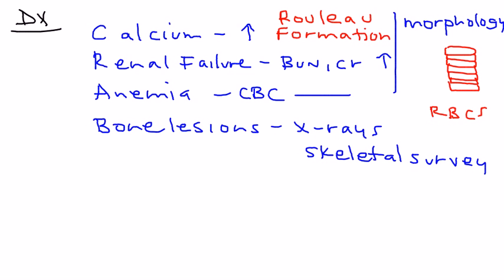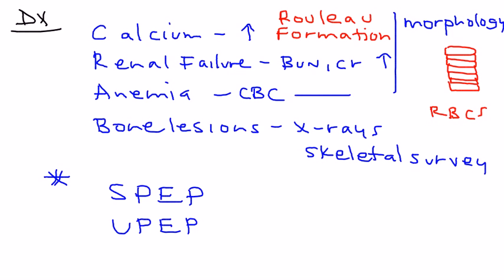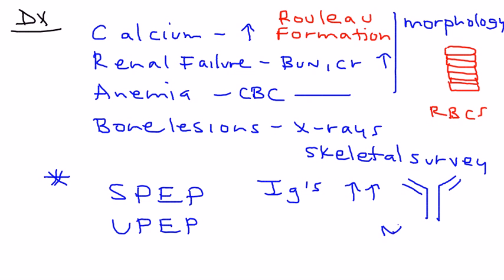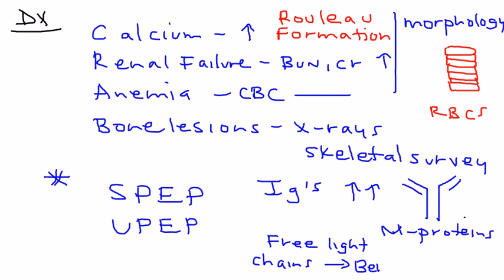The final diagnostic test to mention is serum protein electrophoresis (SPEP) or urine protein electrophoresis (UPEP). These tests detect immunoglobulins, which will be in high quantity because the malignant plasma cells are overproducing them. If seen in full form, they're called M-proteins. If they're just free light chains, they're called Bence-Jones protein. About 80 to 90% of the time, an M-protein will be seen on SPEP and UPEP.